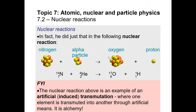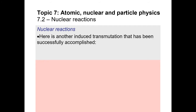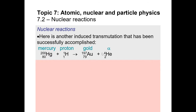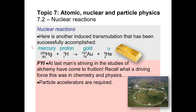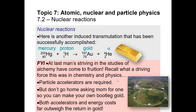Another successful transmutation that may pique your interest: taking mercury and bombarding it with a proton resulted in the production of gold and an alpha particle — so gold was artificially created. Before you think you can create bootleg gold in your basement, realize that the amount of energy required far outweighed any possible benefit from the single gold atom extracted. In fact, producing this gold involves very expensive, very large particle accelerators.